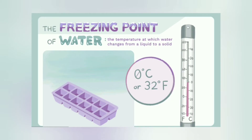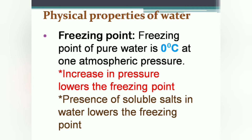The freezing point of pure water is 0 degrees Celsius at 1 atmospheric pressure. The freezing point also gets affected by change in pressure and impurities. Increase in pressure lowers the freezing point of water. This happens because water expands when it freezes, so if we compress it, it becomes more compact liquid water — that is why to convert it into ice its temperature needs to be lower.